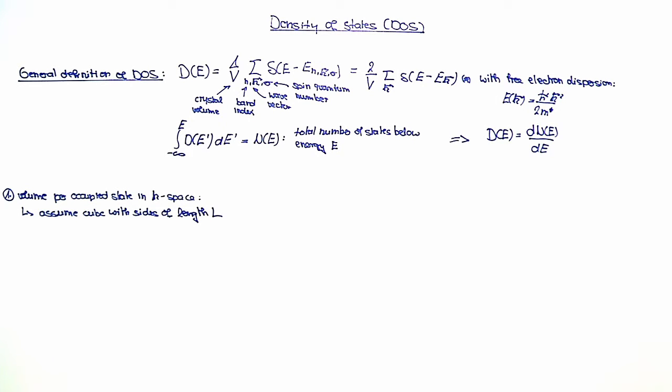We now first calculate the volume per occupied state in k-space, where we assume that we have a cube with sides of length L. In the end, this is going to be irrelevant for the result. As you know from basic solid state physics, one can use periodic boundary conditions for such a system, which read as follows.